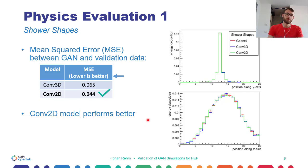It is known that image generation problems are hard to evaluate. We tried to come up with a single-value validation metric, which is calculated by the mean squared error of the two-dimensional projections of our shower images, between the generated images and the validation data. The results for this are shown in the table here. As this is an error, the lower the value, the better is the accuracy. One can see that the MSE for our new convolutional 2D model is lower than the one for the convolutional 3D model, and therefore our new convolutional 2D model reaches a higher accuracy.